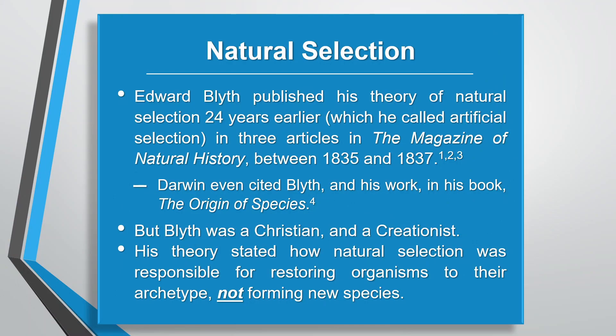I'd also like to point out that most people think Darwin's theory of natural selection was something new, but it wasn't. Edward Blythe published his theory of natural selection 24 years earlier, which he called artificial selection, in three articles in the Magazine of Natural History between 1835 and 1837. Darwin even cited Blythe in his book The Origin of Species. However, a significant difference was that Blythe was a Christian and a creationist. His theory stated how natural selection was responsible for restoring organisms to their archetype — not forming new species.